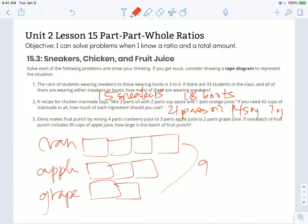If one batch of fruit punch includes 30 cups of apple juice, how large is this batch of fruit punch? So all of this together represents 30, so that means each of those parts must be 1/3 of 30, or 10. So that means I have 10 parts in each of these rectangles.